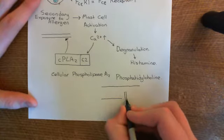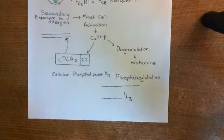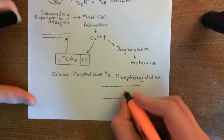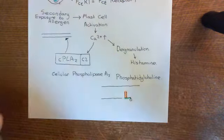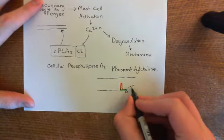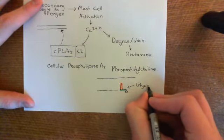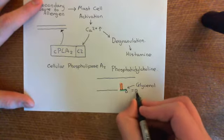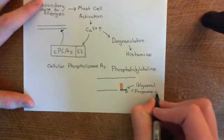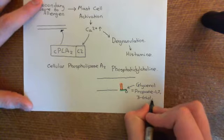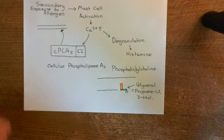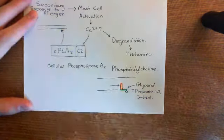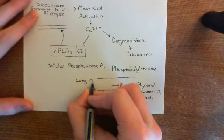A normal phospholipid in cartoon form has two long-chain carboxylic acids esterified to the first and second alcohol groups of the glycerol molecule. The glycerol molecule is the main backbone for a phospholipid — its chemist's name is propane-1,2,3-triol. It's a three-carbon molecule where you have alcohol groups coming off all three carbons. You then have long-chain carboxylic acids — also called fatty acids — esterified to the first and second alcohol groups.